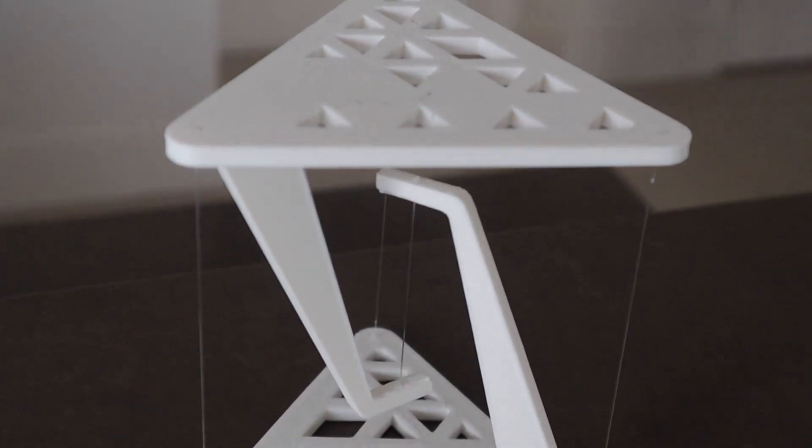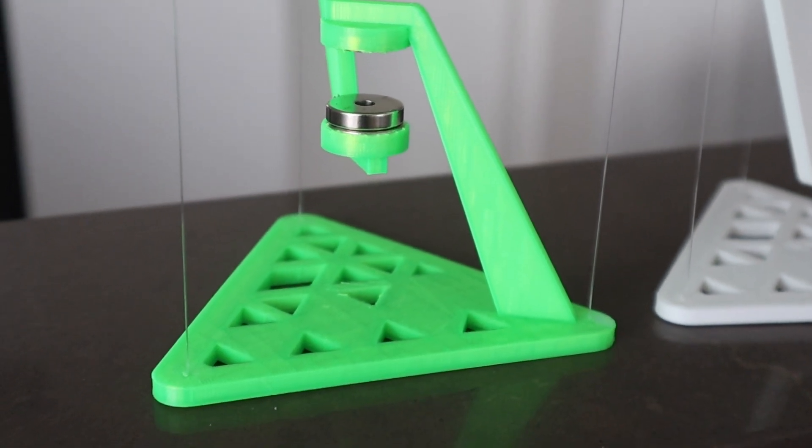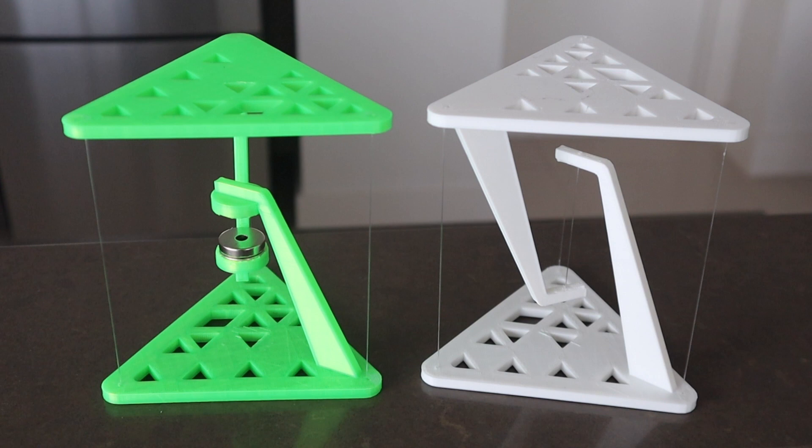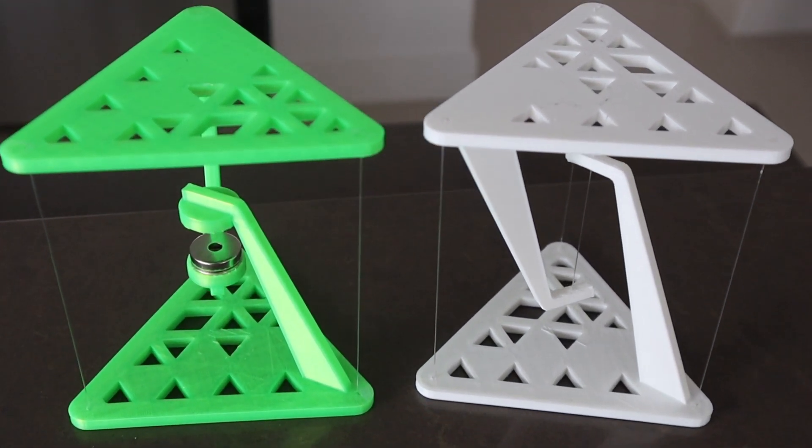The piece of fishing line in the center of the structure is in tension and is supporting the load of the surface of the table and whatever is placed on it. The three pieces of line on the outside are simply holding the top surface in place so that it remains directly overhead the center line and doesn't fall over.